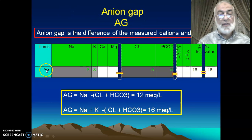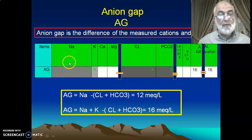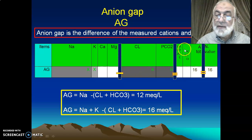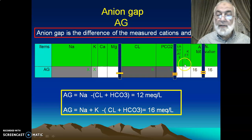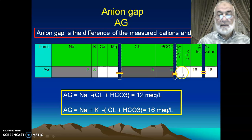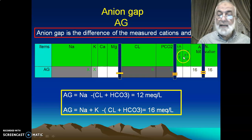When we come to anion gap, this is another monitor. What do we mean by anion gap? Anion gap is measured as sodium plus potassium minus chloride and bicarbonate. This equals the fixed acid. Fixed acid includes strong acids and weak acids. This is why anion gap has a value.